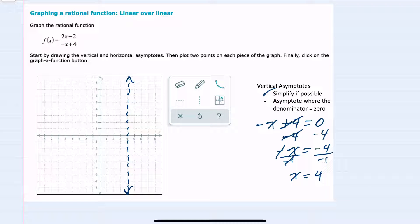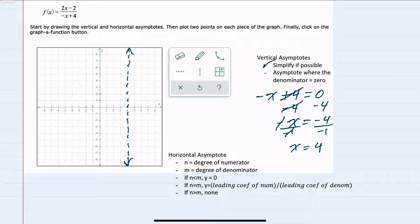And then we can move to our horizontal asymptote. And for horizontal asymptotes, we look at n and m, the degree of the numerator and the degree of the denominator. And here our n, the degree of the numerator, is 1. And our m, the degree of the denominator, is also 1. So when the degrees are the same,